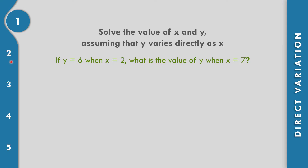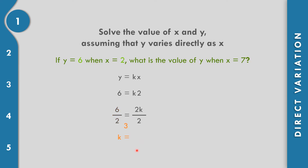Let us solve the value of x and y, assuming that y varies directly as x. If y equals 6 when x equals 2, what is the value of y when x equals 7? Our equation is y equals k times x. Substituting: 6 equals k times 2. Dividing both sides by 2, we get k equals 3. So the constant of variation is equal to 3.